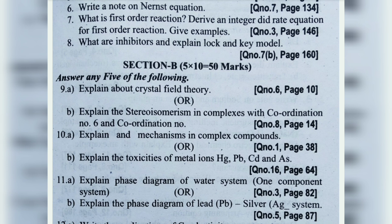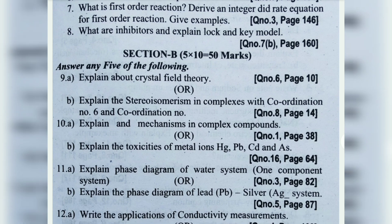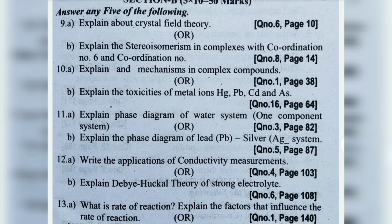10th: Explain reactions and mechanisms in complex compounds. 10th (b): Toxicity of metal ions — Hg, Pb, Cd, and As. 11th: Explain phase diagram of water system — phase diagrams are coming again. Previously lead-silver came; now water system. Filter (freezing) mixtures also come.